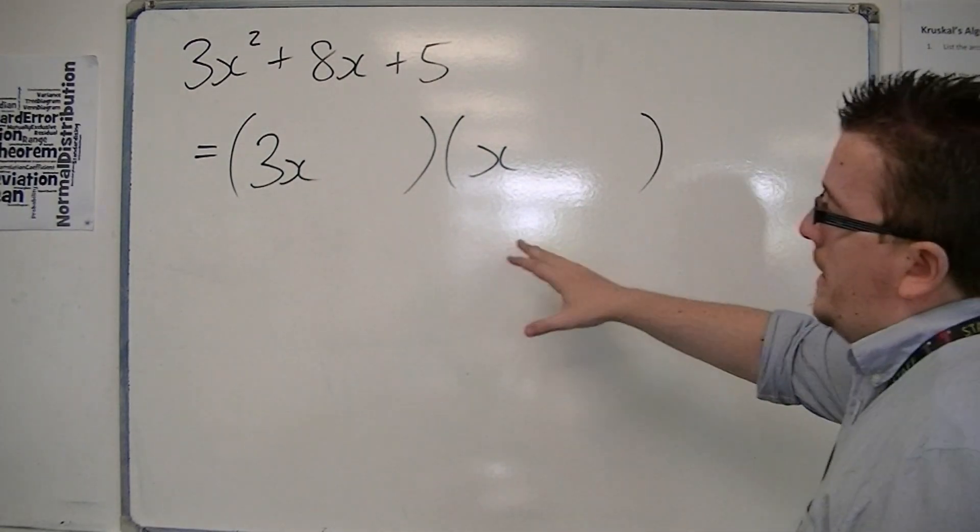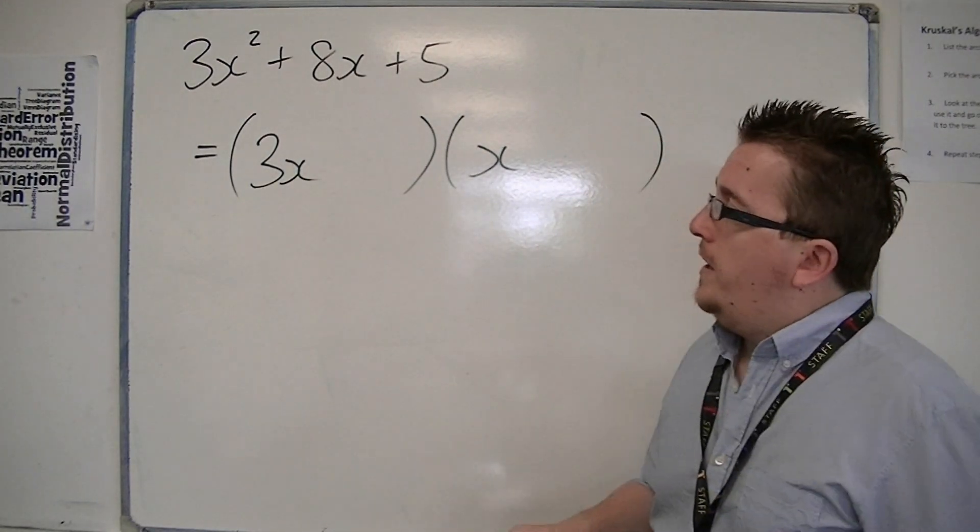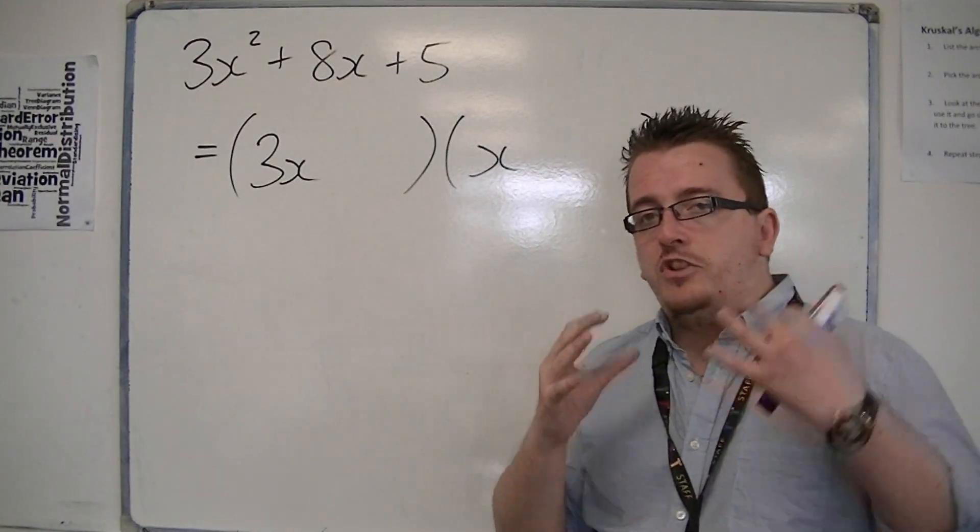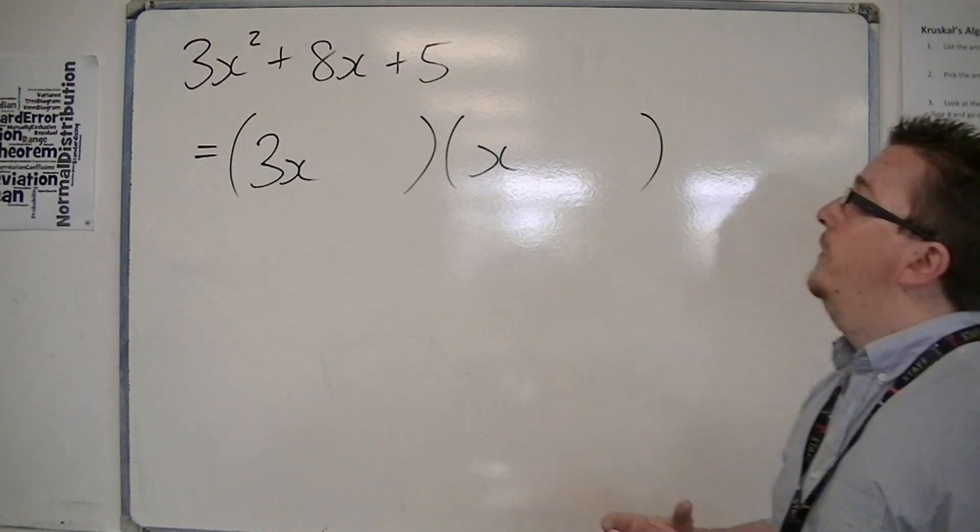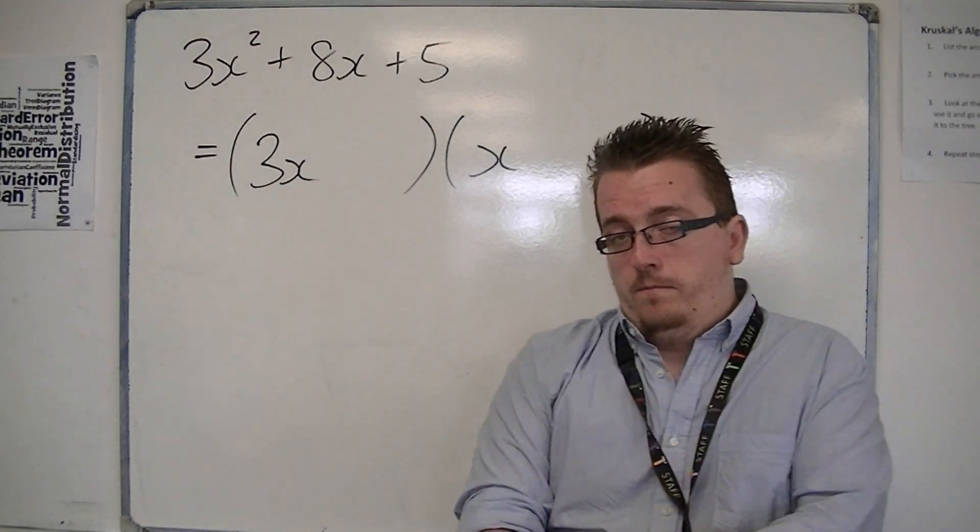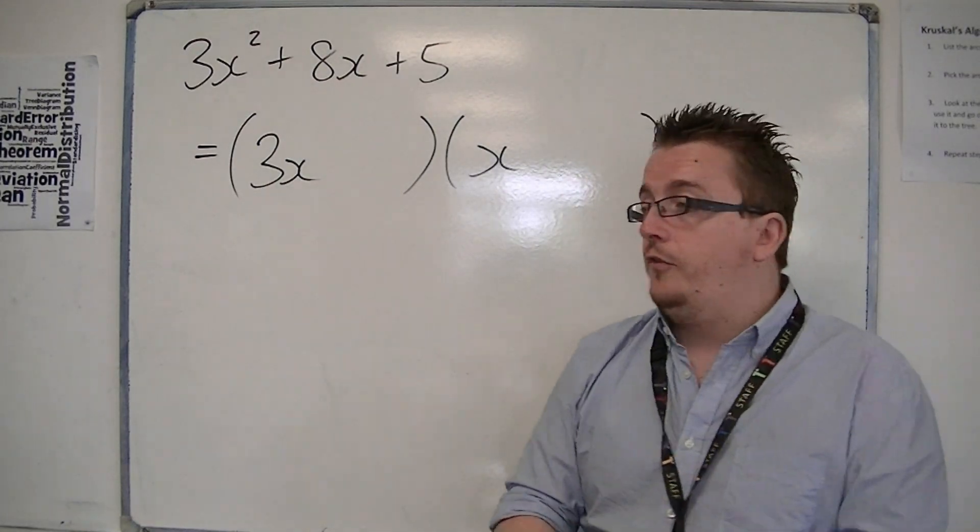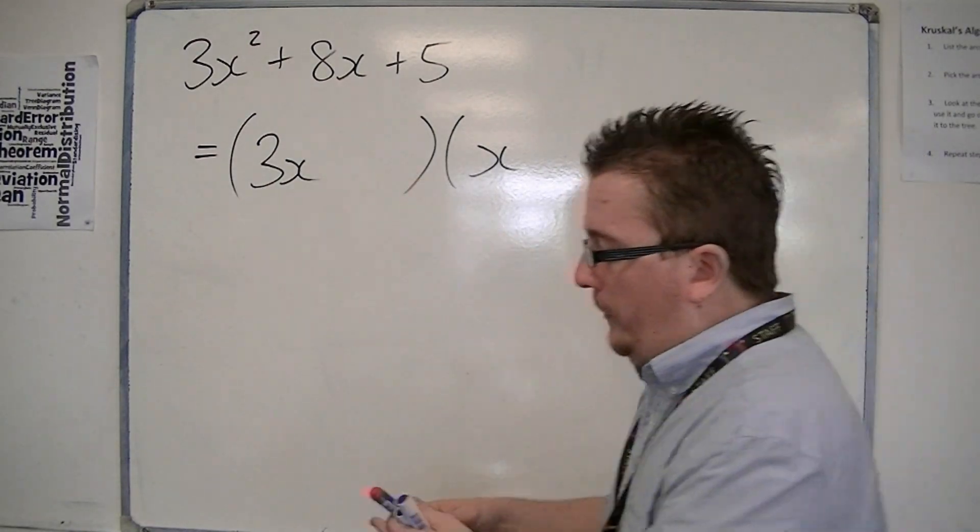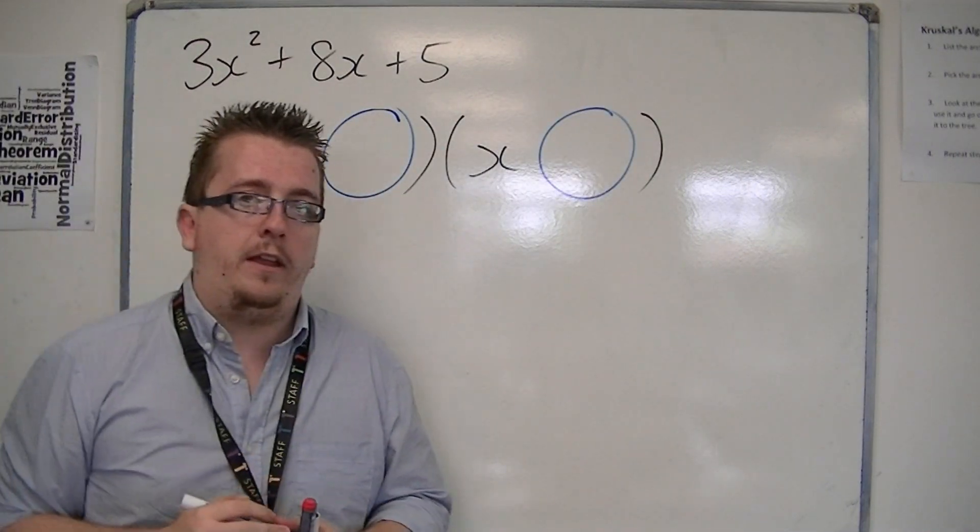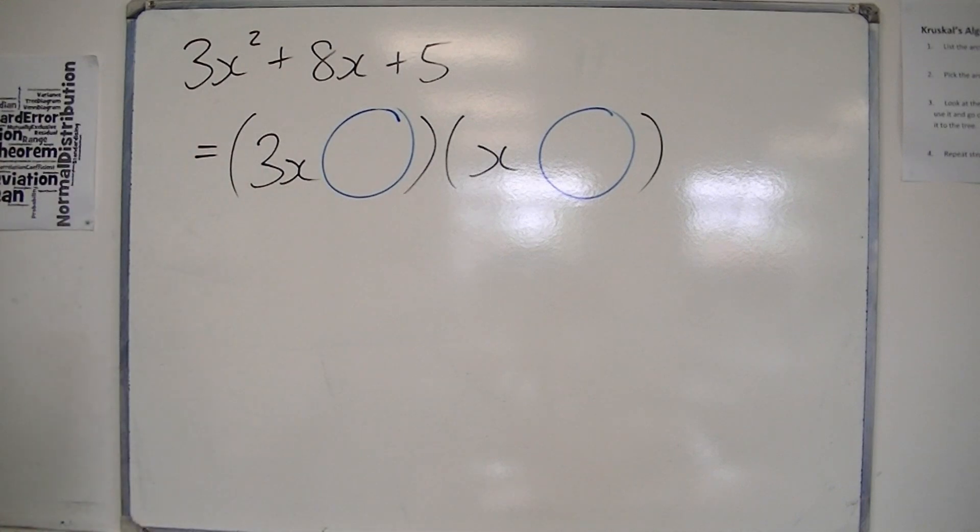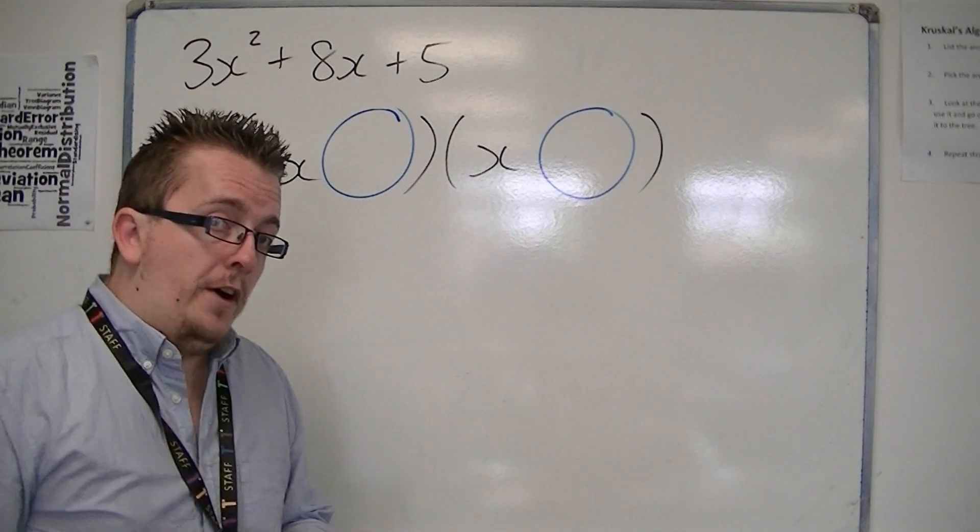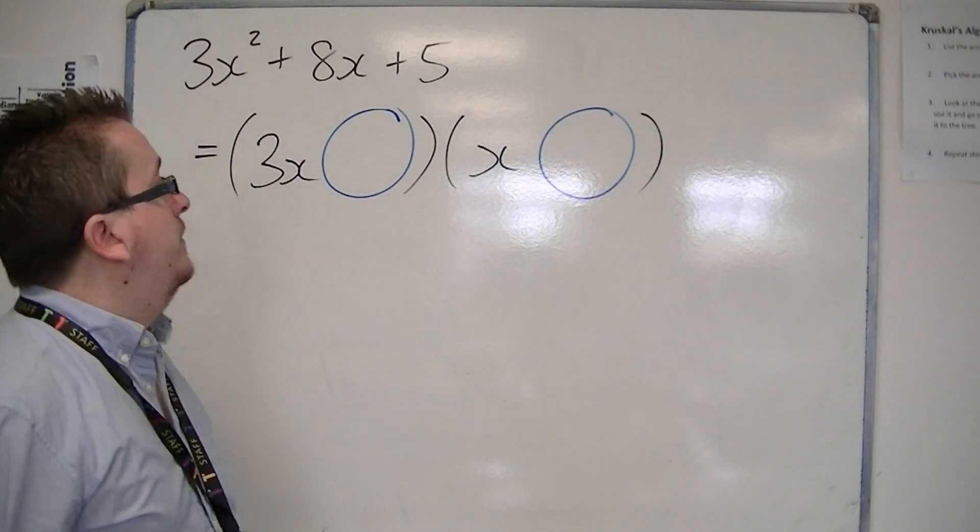So with this, what you need to be thinking of is that the number in front of the x squared is prime. There is only one way that this is going to factorise. And then you look at this number at last, the constant term, the plus 5. These two numbers that are missing need to multiply together to make that plus 5. So that could be 1 and 5, or minus 1 and minus 5.